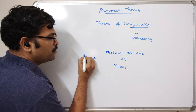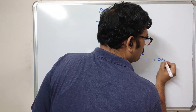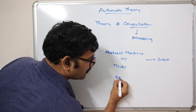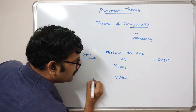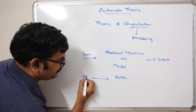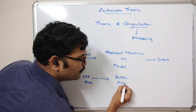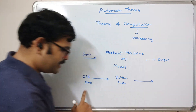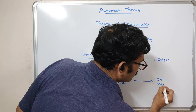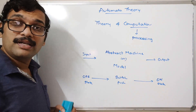This abstract machine will take the input and produce some sort of output. For example, consider a switch. By default it will be in the off state. If you push this switch, automatically the state will be changed to the on state. This is one sort of model.